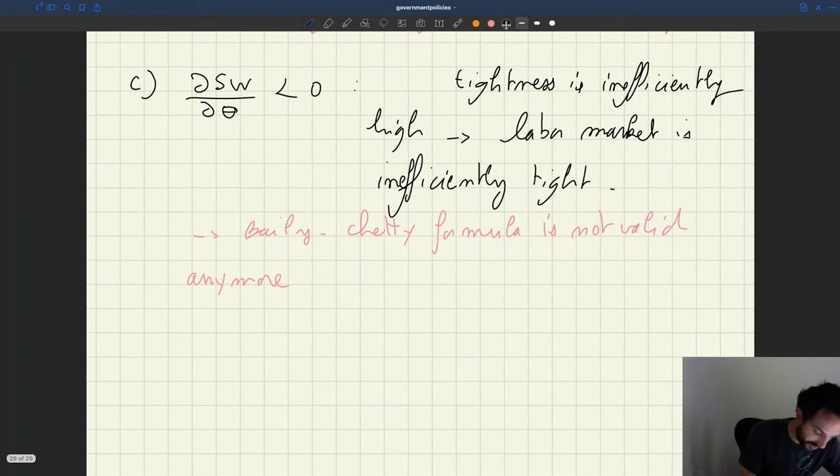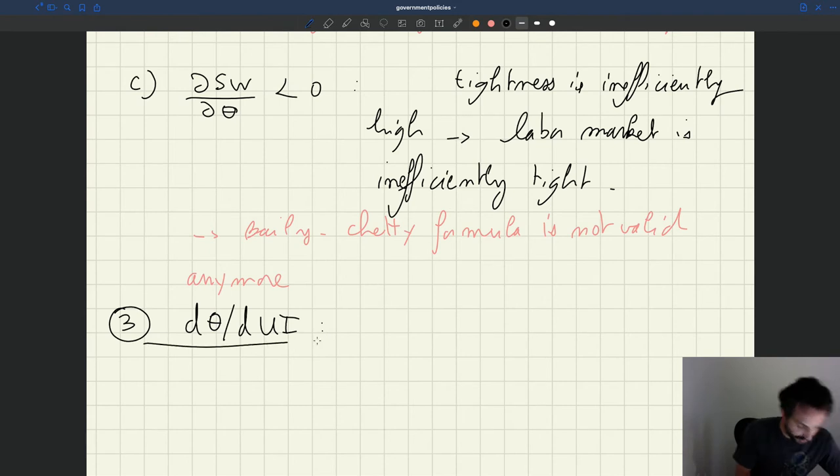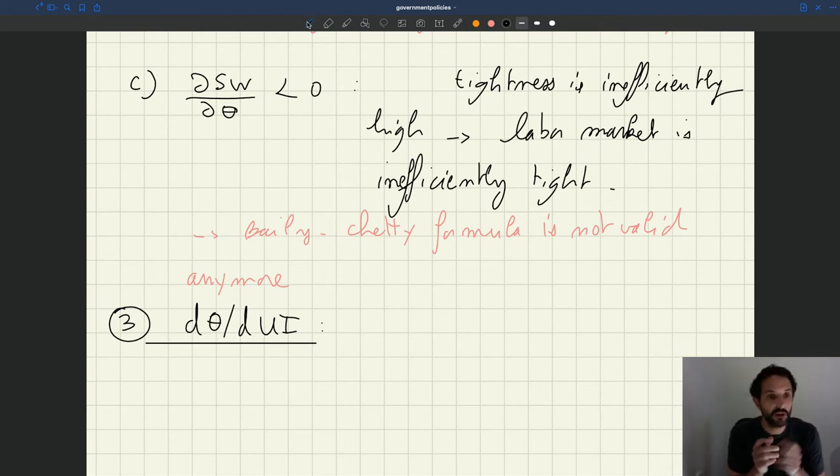So that's the third term in the formula. What does it mean? The third term is just the effect of UI on tightness. So this is really how the policy of UI affects the labor market equilibrium, the equilibrium tightness.